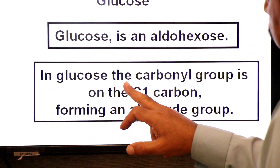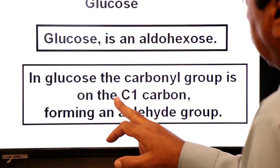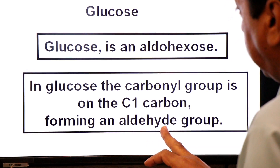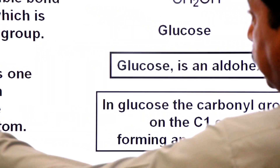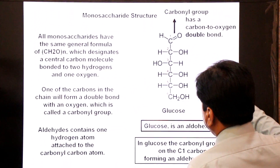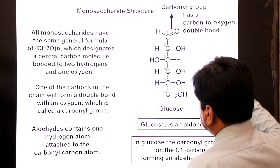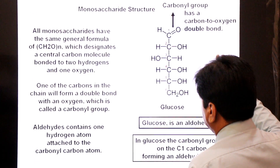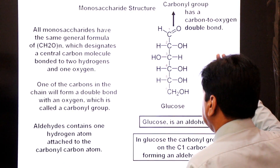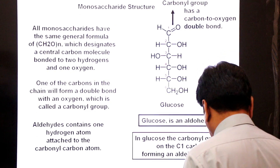In glucose, the carbonyl group is on carbon 1, forming an aldehyde group. This is why glucose is an aldehyde. Now we move to the ketohexose, which is fructose.